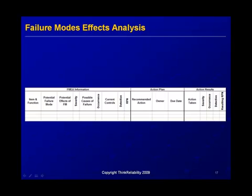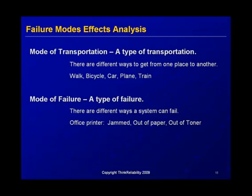When talking about something that could happen in the future, you can assign probabilities because some failure modes are more likely than others. If it's in the past and it did happen, there are no probabilities because it did occur. A failure mode is a very simple term — like a mode of transportation, it's just a type of failure. There are different ways a system can fail. For example, the printer in your office could jam, be out of paper, or be out of toner — those are different failure modes, different ways the printer could fail.